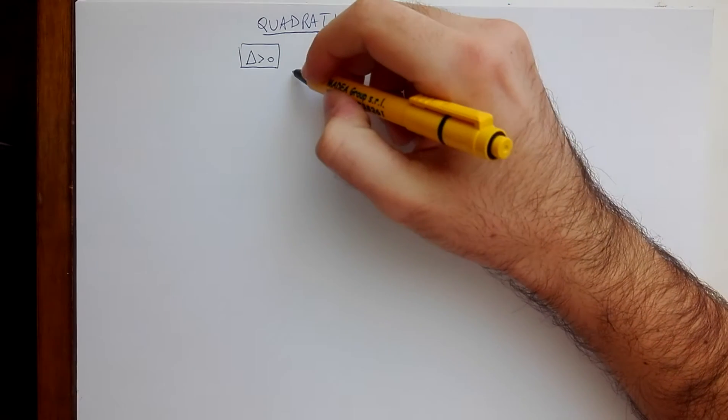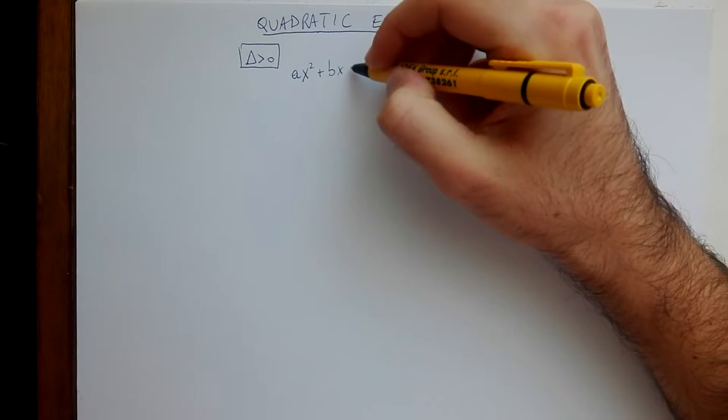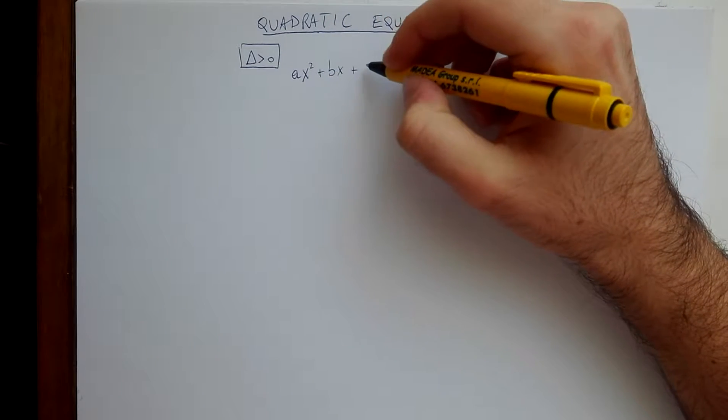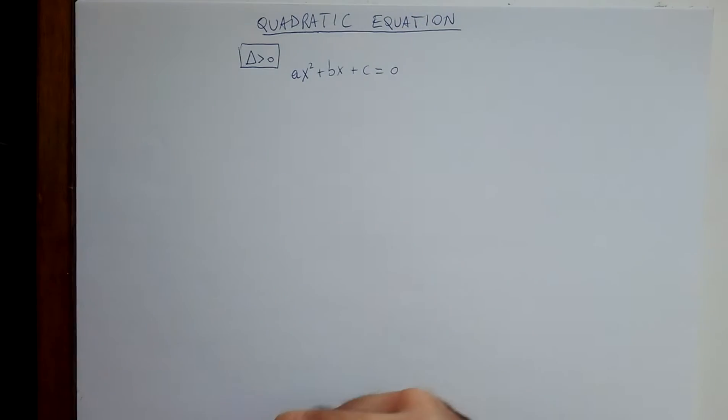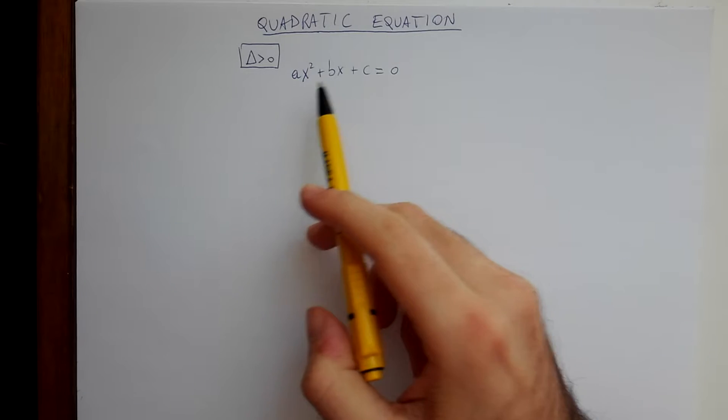So in general we have that given a quadratic equation ax squared plus bx plus c equals zero, where a, b and c are numbers and x is the unknown,